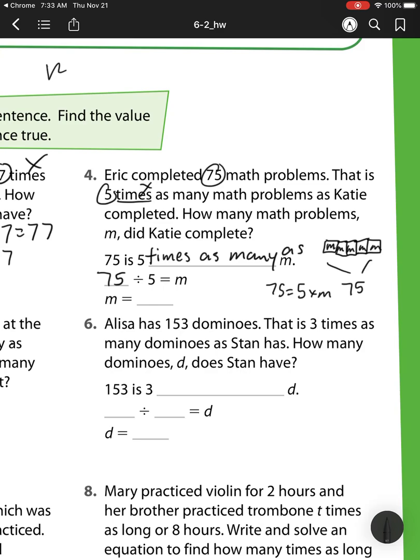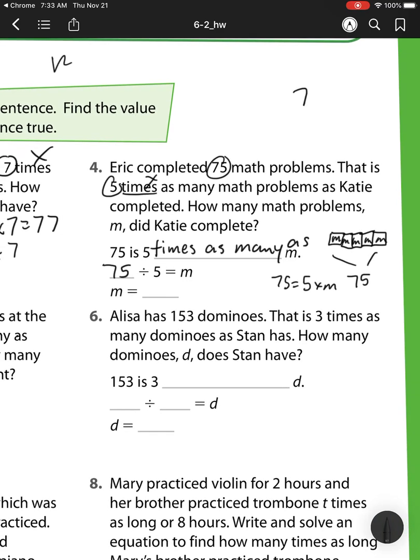And m, if I look at my math up here, 75 divided by 5. I divide. 5 goes into 7 one time. Multiply. 5 times 1 is 5. Subtract. 7 minus 5 is 2. Check. 2 is less than 5. Bring down.